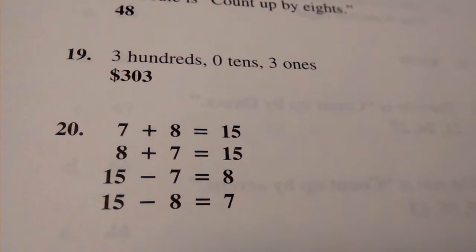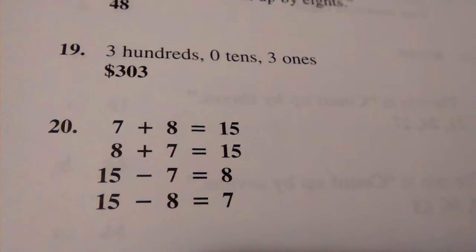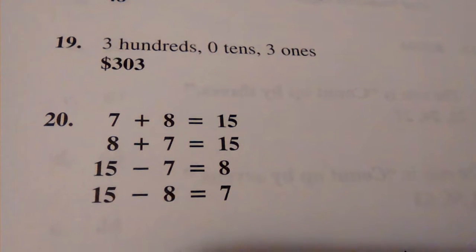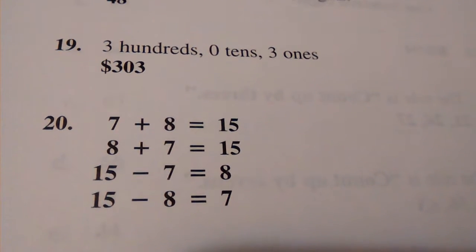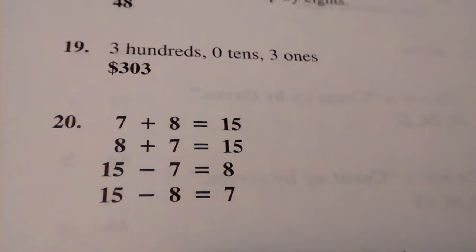Number 20, 7 plus 8 equals 15, 8 plus 7 equals 15, 15 take away 7 equals 8, 15 take away 8 equals 7.